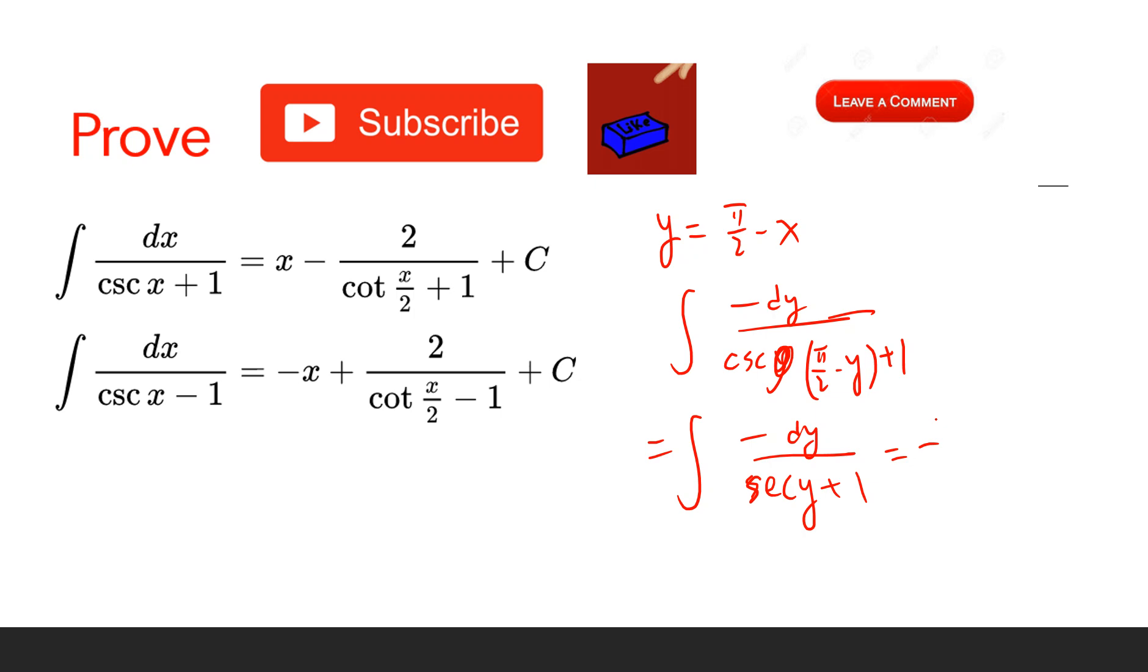So the answer is minus y minus tan(y/2) plus C. And then we change it back. We got minus y plus tan(y/2) plus C. Since y equals π/2 minus x, there's a π term, but this is a constant, so we get tan(π/2 minus x) plus C.